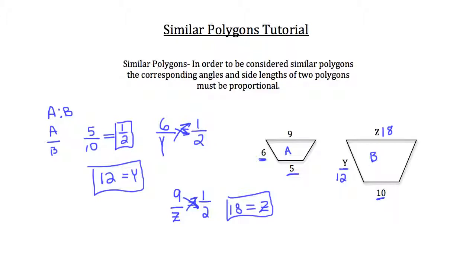And for the last side, let's just assume that these two are isosceles trapezoids, meaning that the legs are congruent. So, that means that the other leg on trapezoid A is going to have a value of 6, and the other leg on trapezoid B is going to have a value of 12.